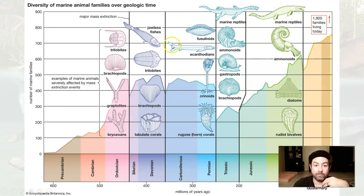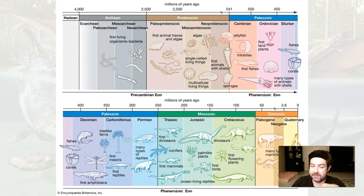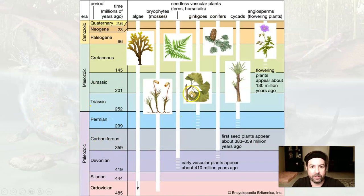Trilobites largely saw their way out during this time, along with many jawless fish, brachiopods, and some types of corals at the end of the Devonian. Getting out of the Devonian, we're going to tiptoe into the Carboniferous — known as the Carboniferous in most parts of the world, but in the United States we know it as the Mississippian and Pennsylvanian. We're going to get diversification of trees and the first reptiles appearing during this time. Some vascular plants are starting to take hold, and cone-bearing conifers will come in the next period.